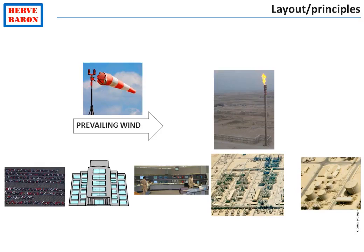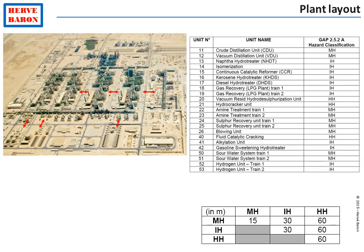Once the overall facility layout has been decided, the relative location of the various process units must be defined. The arrangement of process units within the facility is primarily dictated by safety considerations. Separation distances are kept between units to limit the impact of a fire or explosion in one unit on nearby units, as the radiation level from a fire or overpressure blast from an explosion very quickly decreases with distance.